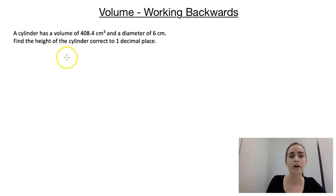So what we always should start with is writing down the formula. We know that the formula for the volume of a cylinder is V = πr²h, and then we can go through and fill in what we know.